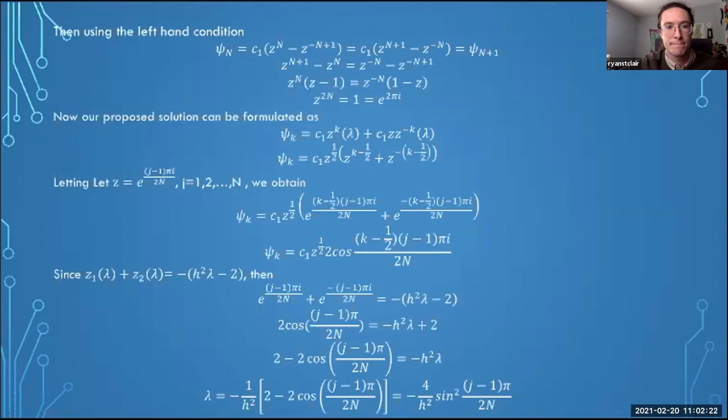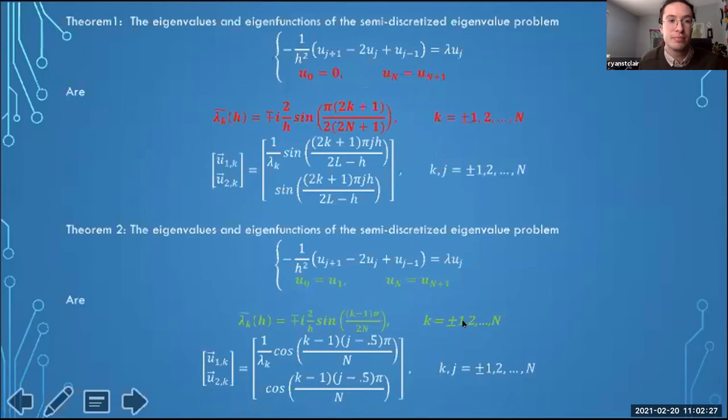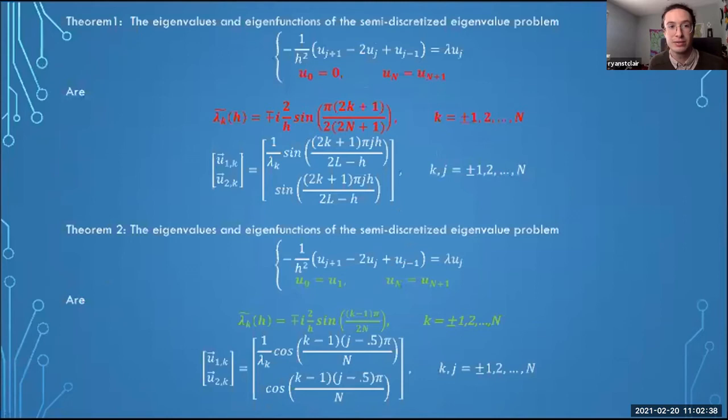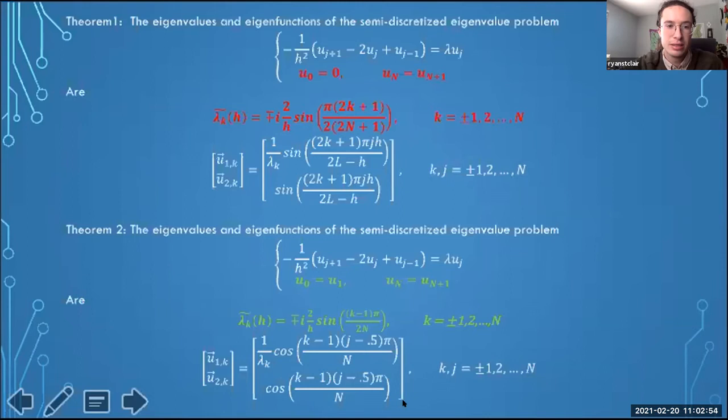As mentioned, we proposed the ψ problems as an auxiliary to the original u problems. The eigenvalues of the discretized wave equation are the square roots of what we found in the lemma — specifically ±i times the square root of the lemma result — with K and J going from 1 to N for each of the nodes.